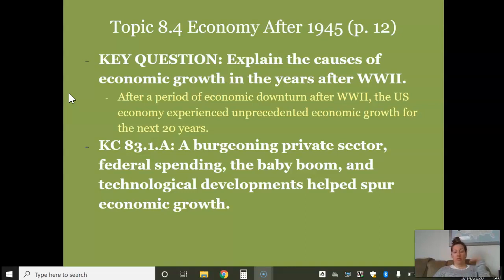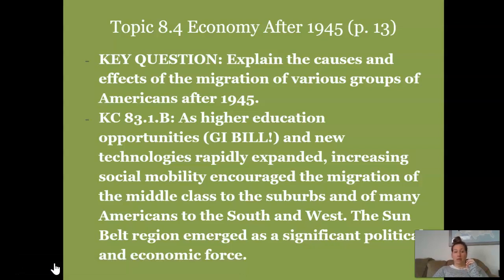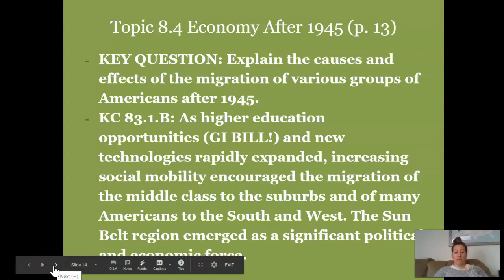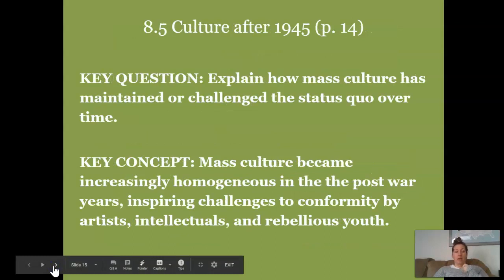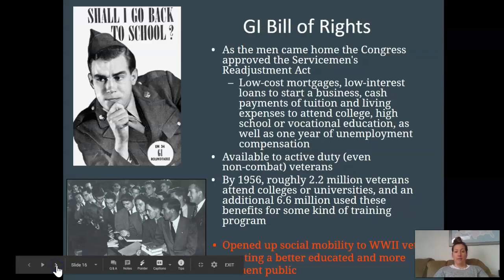We have two more key concepts to preview. On page 13, the key question: explain the causes and effects of the migration of various groups of Americans after 1945. The key concept: higher education opportunities and new technologies rapidly expanded, increasing social mobility and encouraging the migration of the middle class to the suburbs and of many Americans to the South and West. The Sunbelt region emerged as a significant political and economic force.